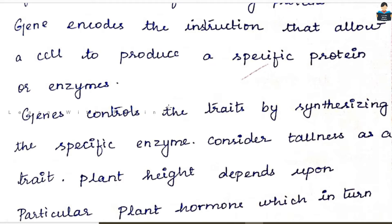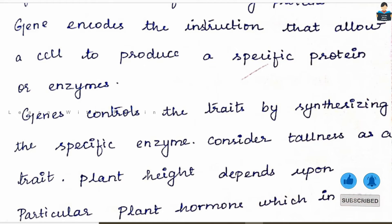If it is dwarf, it is recessive. If it is recessive, the enzyme activity is very low — the enzymes are too low. The plant hormone — auxin — hormone secretion is less, and we know that plant is a dwarf plant, a short plant. This is how the characters are expressed.